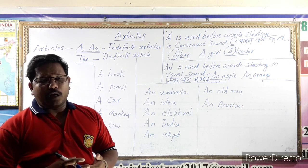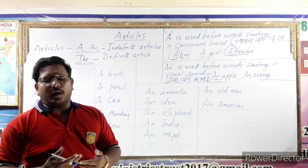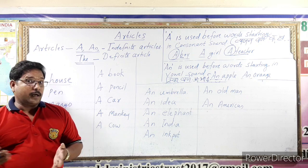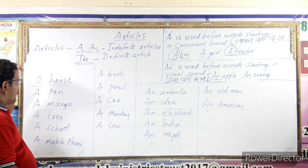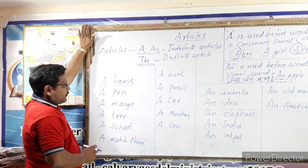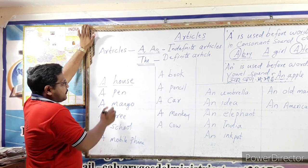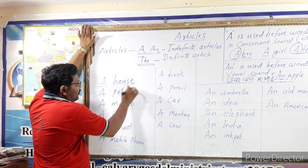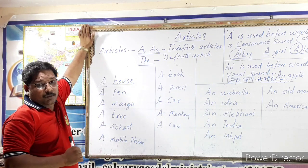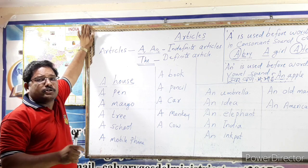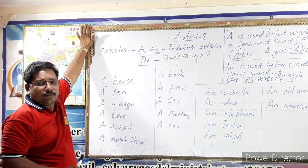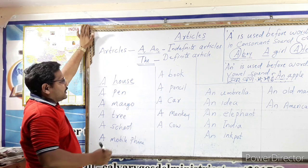I will explain countable and uncountable nouns in the next video. Countable nouns — book, pencil, house — can be counted. Uncountable nouns — water, sugar — cannot be counted. The pronunciation in English language is very important.